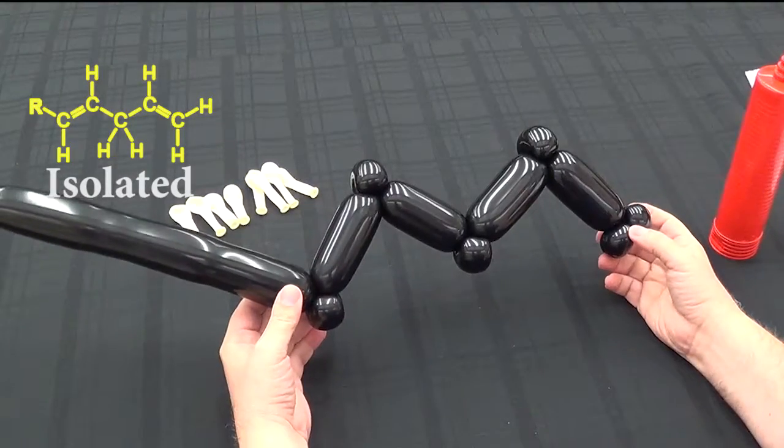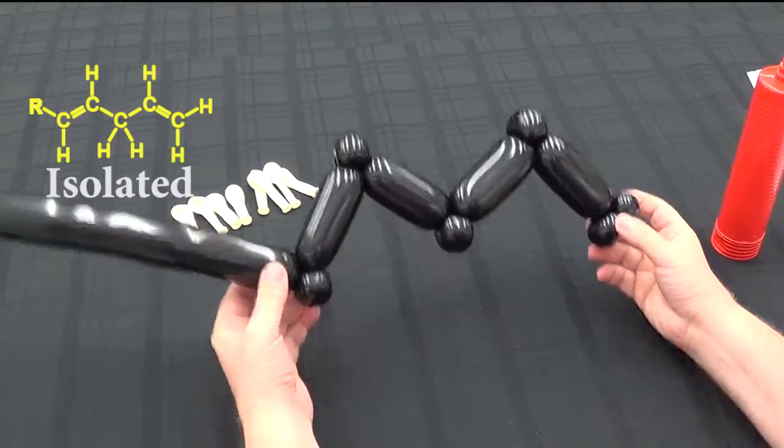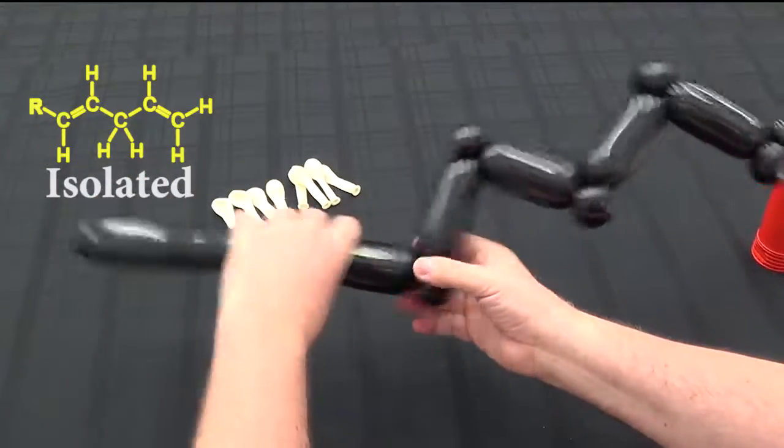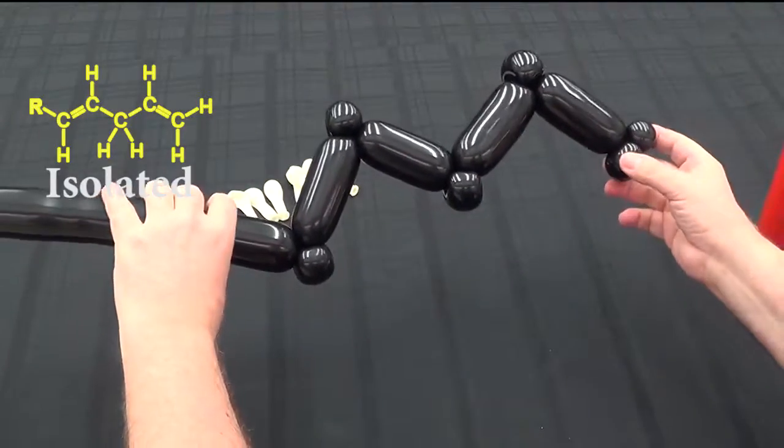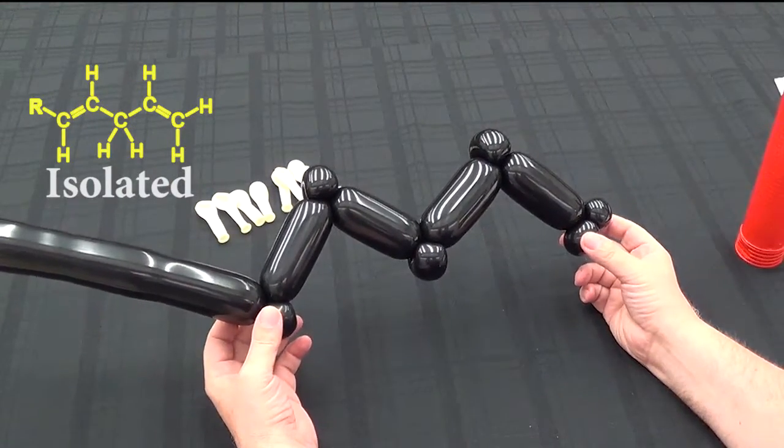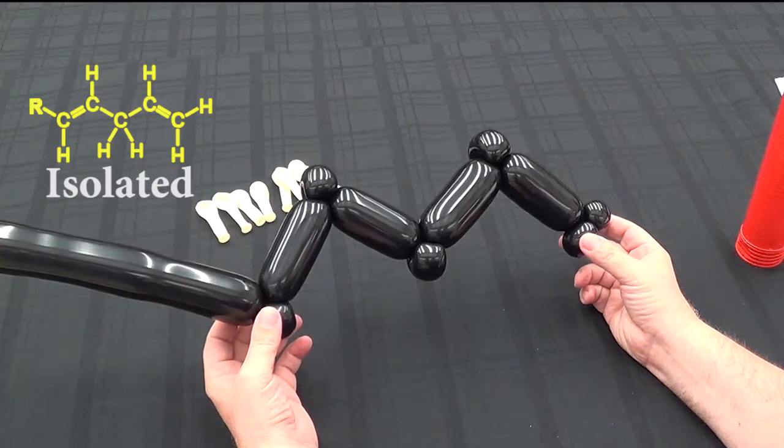The rest of the balloon we could cut off, but for purposes in class it doesn't really matter. We can just say that's an R group hanging off here. We're looking at these five carbons now in particular. The next step is to attach the five inch balloons to show the P orbitals that are overlapping.